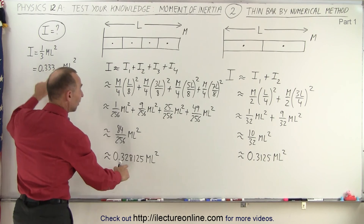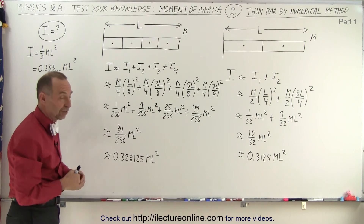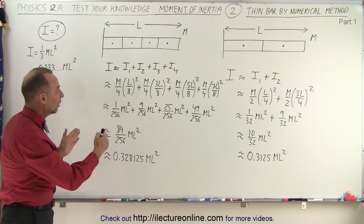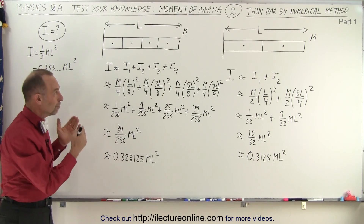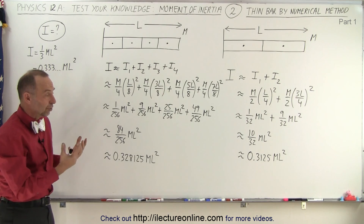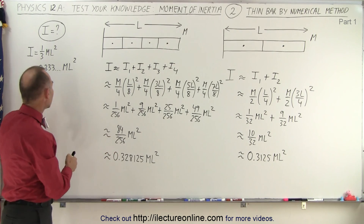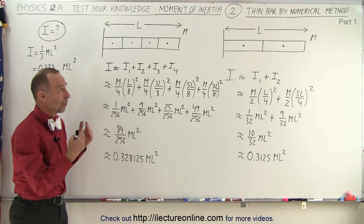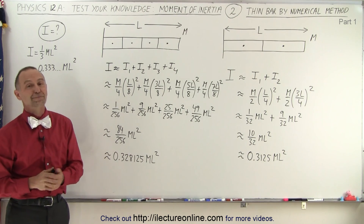Notice we're getting very close to the actual value by only going to four individual segments. When you go to 8, 16, 32, 64, and so forth, you're going to get very, very close very quickly to the actual moment of inertia. That's what we call using the numerical method to find the moment of inertia. Next, we'll set it up to solve for n segments, and as n approaches infinity we should get the exact value.